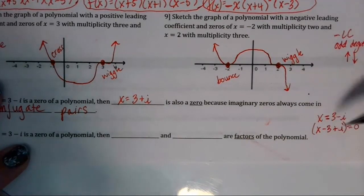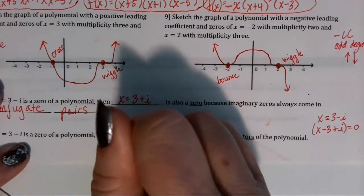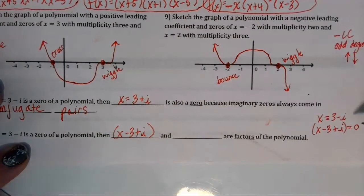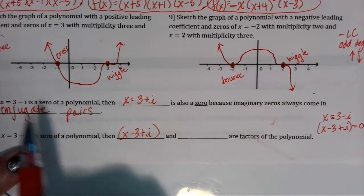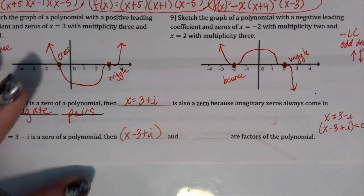And this would be one of the two factors, x minus 3 plus i. To get the other factor, I have to do the same thing but with the conjugate, because remember they come in conjugate pairs. And up here in number 10, we found the conjugate of 3 minus i was 3 plus i.